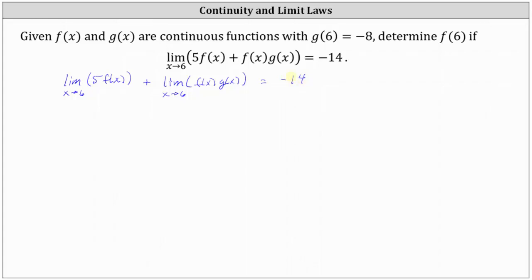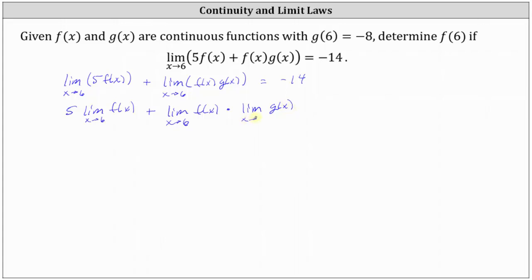Continuing to apply the limit properties, the limit of five times f of x as x approaches 6 becomes 5 times the limit of f of x as x approaches 6. Plus, since the limit of a product is equal to a product of limits, the limit of f of x times g of x as x approaches 6 equals the limit of f of x times the limit of g of x, both as x approaches 6. This is still equal to negative 14.